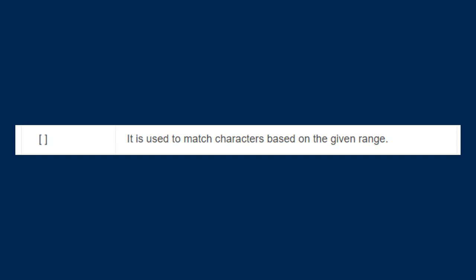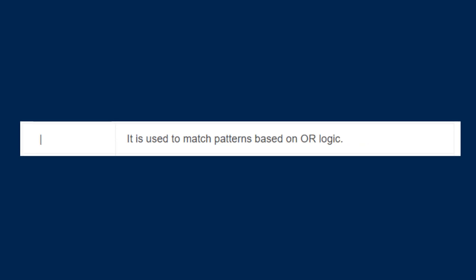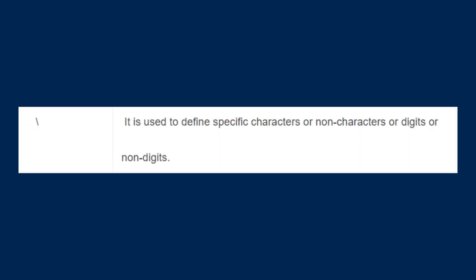The next is the pipe sign. It is used to match patterns based on OR logic. When you have to define OR logic, you use this sign. The last metacharacter is the backslash, and it is used to define specific characters or non-characters, or digits or non-digits.